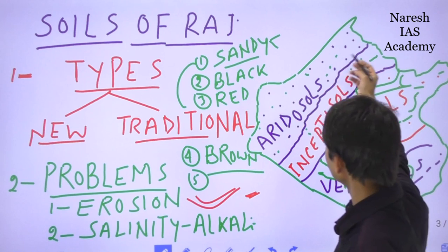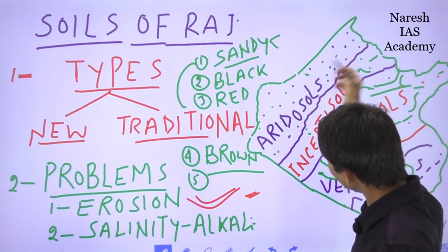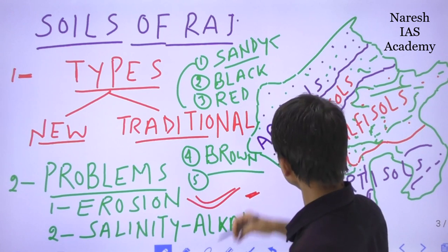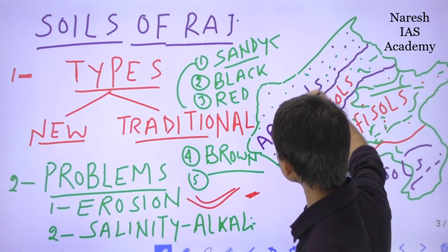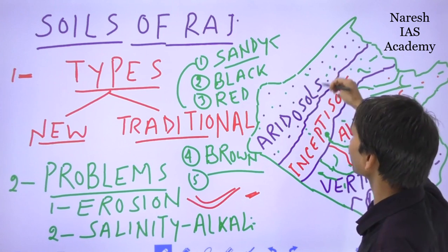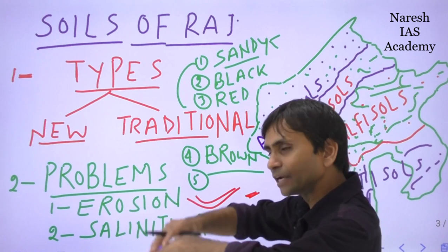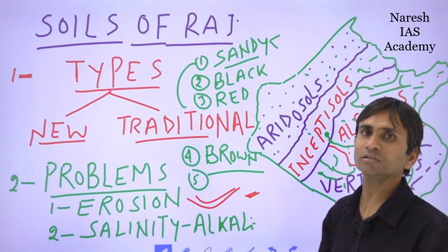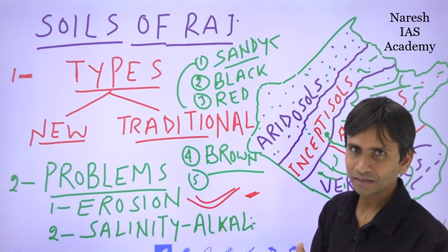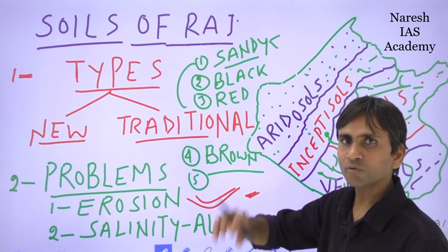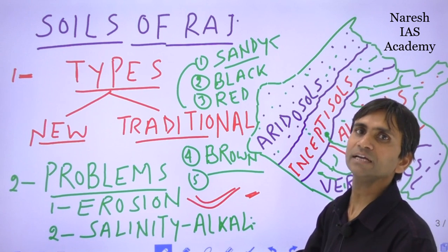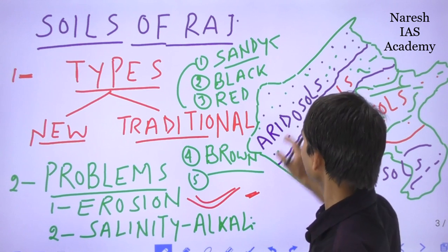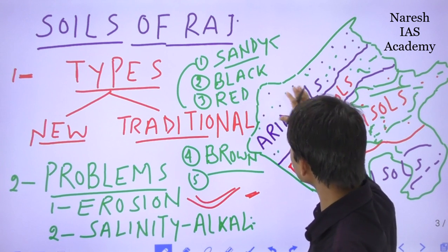In western Rajasthan, the Thar Desert is completely under wind erosion. Due to wind erosion, most sand dunes are formed in this region. Between the sand dunes, sometimes playa or lagoon lakes are formed. In the interior areas between sand dunes, water is stored and converts into playa lakes, mostly found in Jaisalmer and Barmer districts.